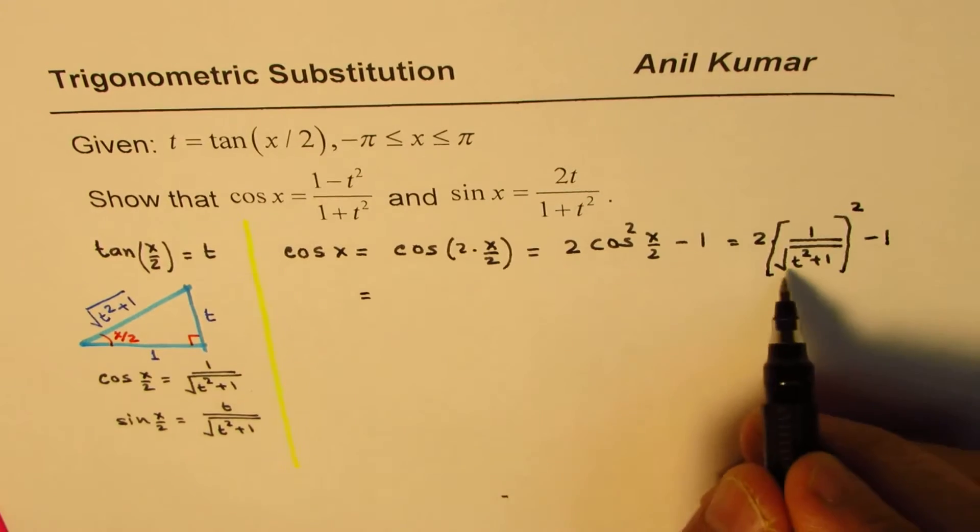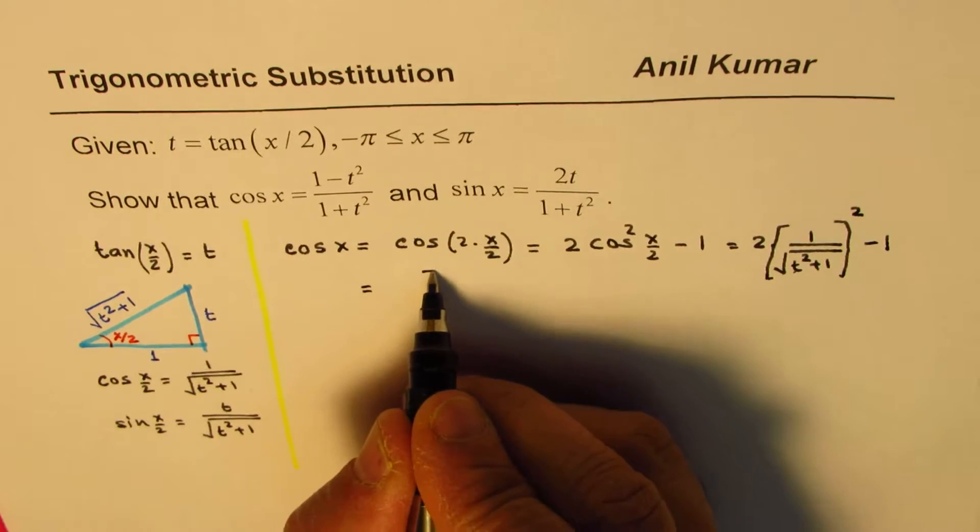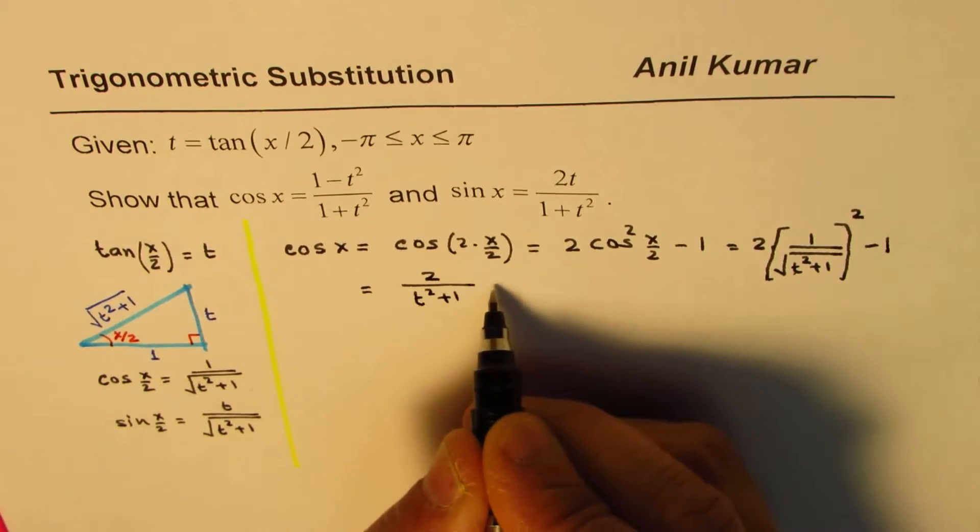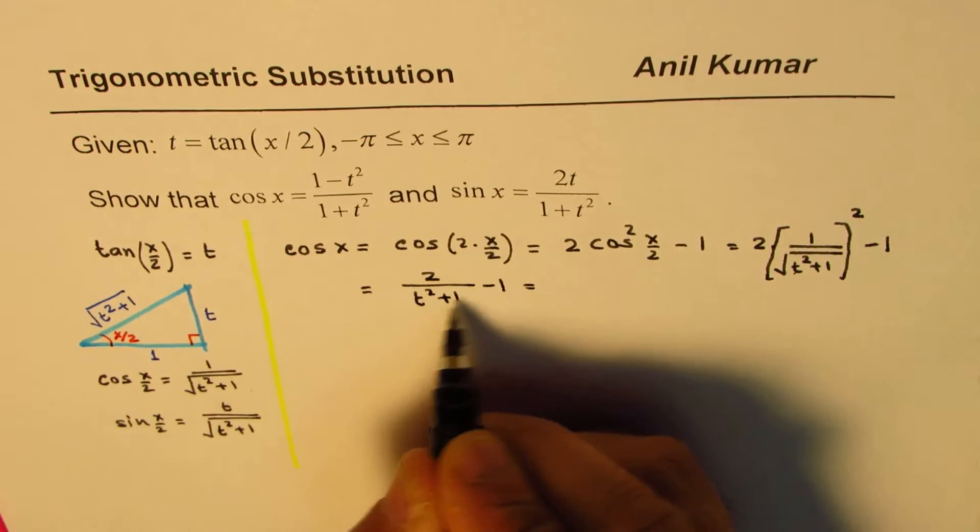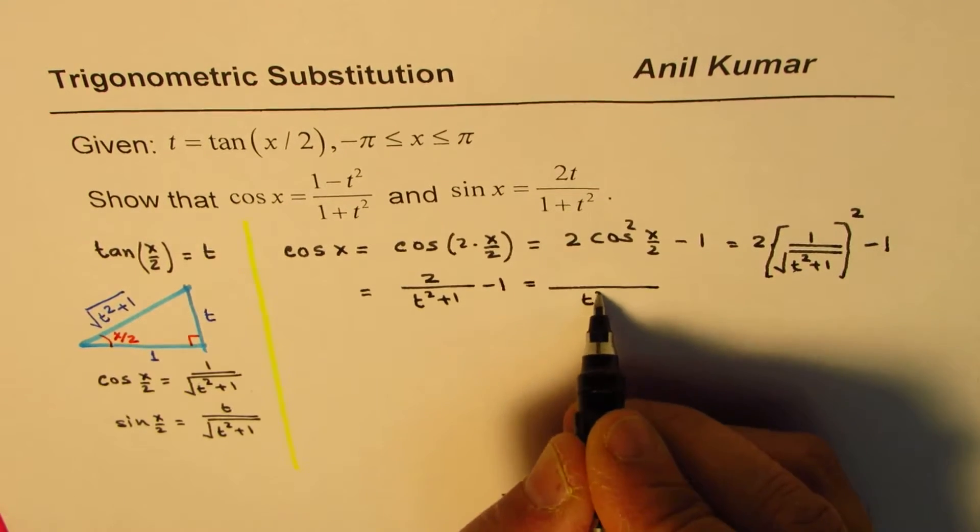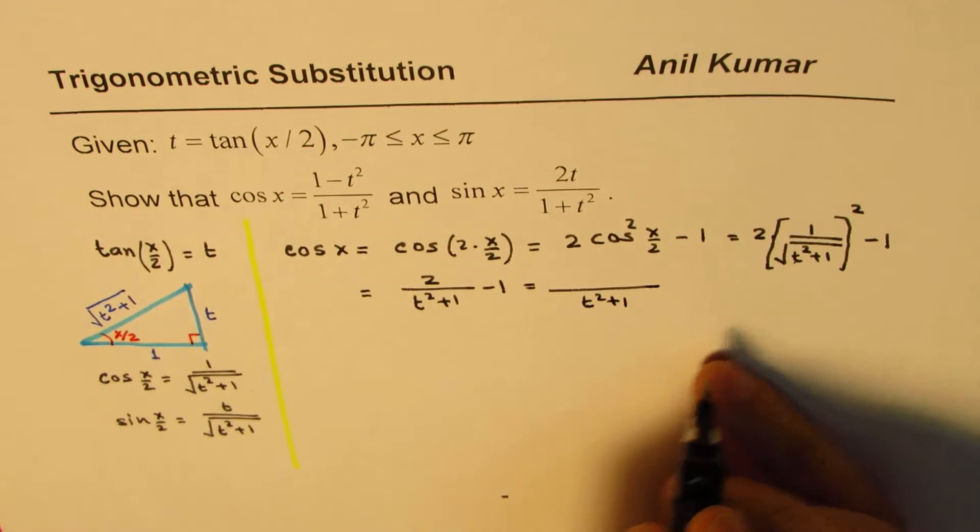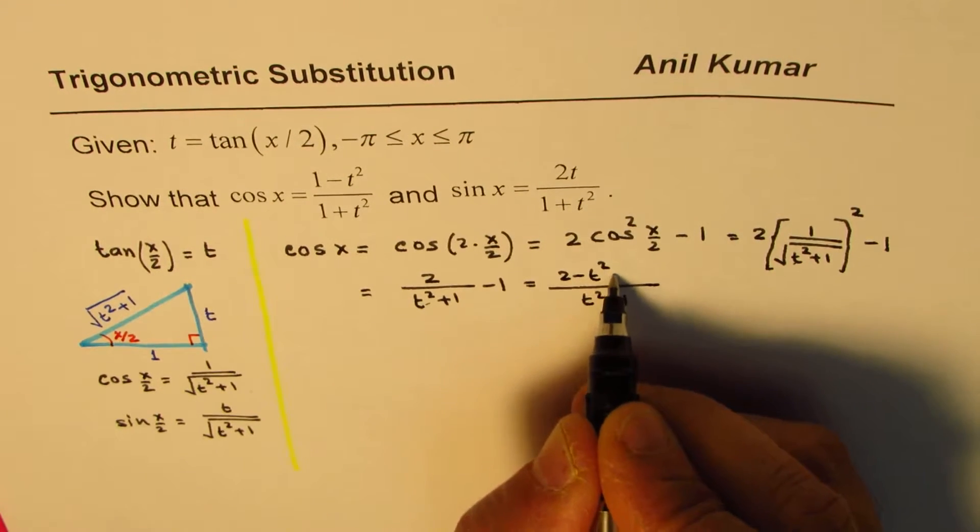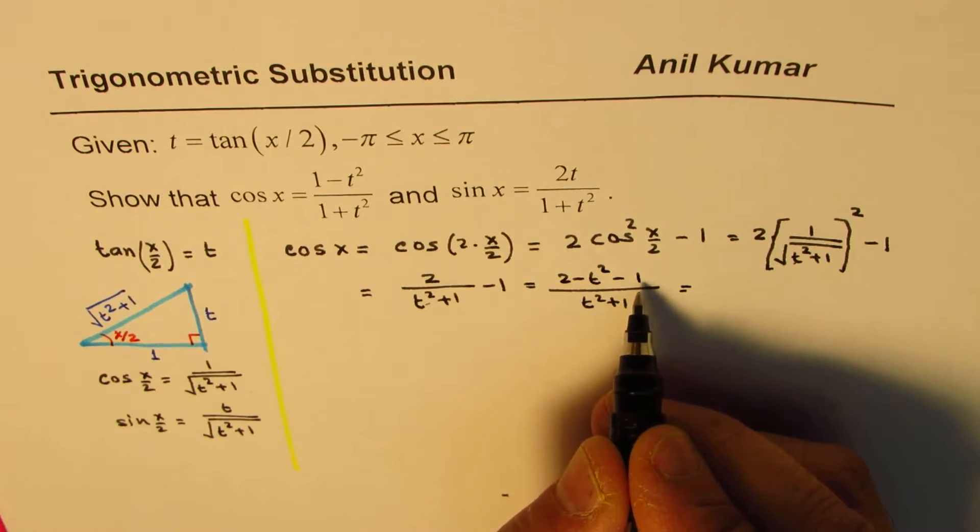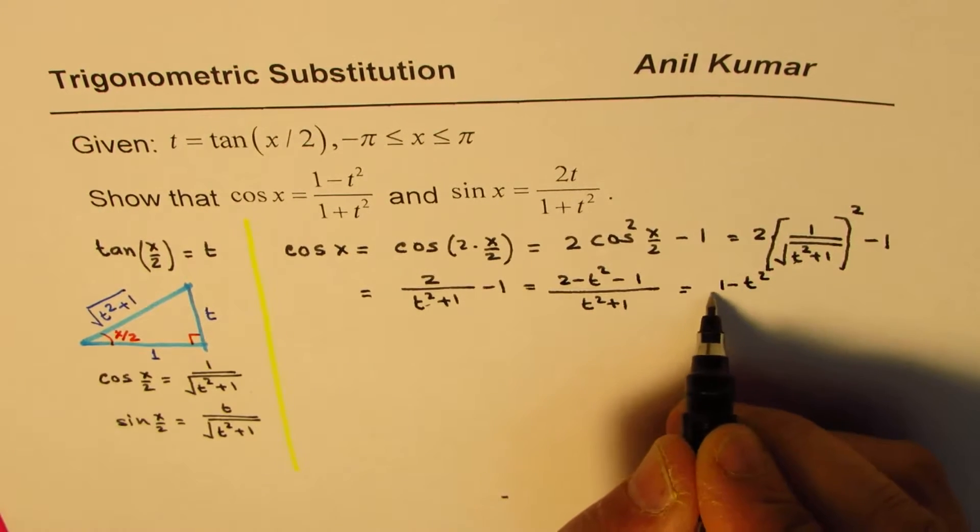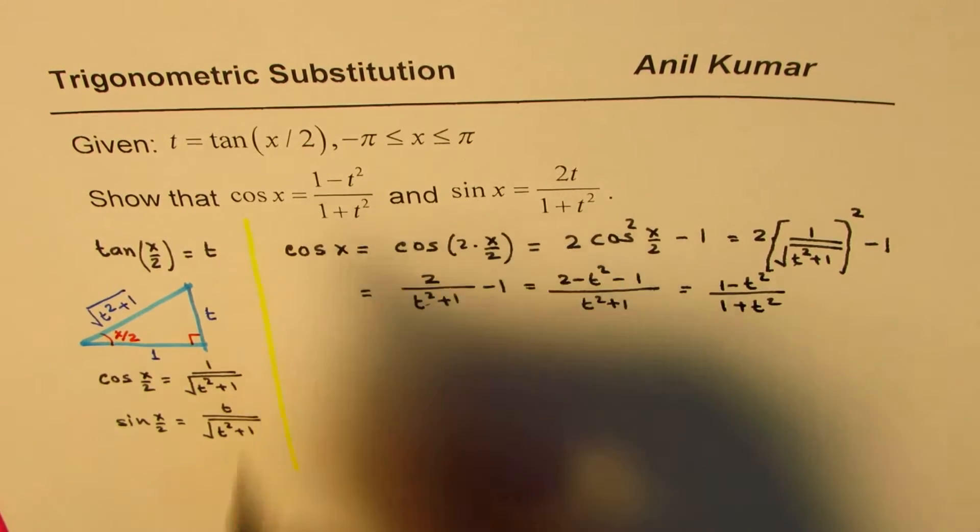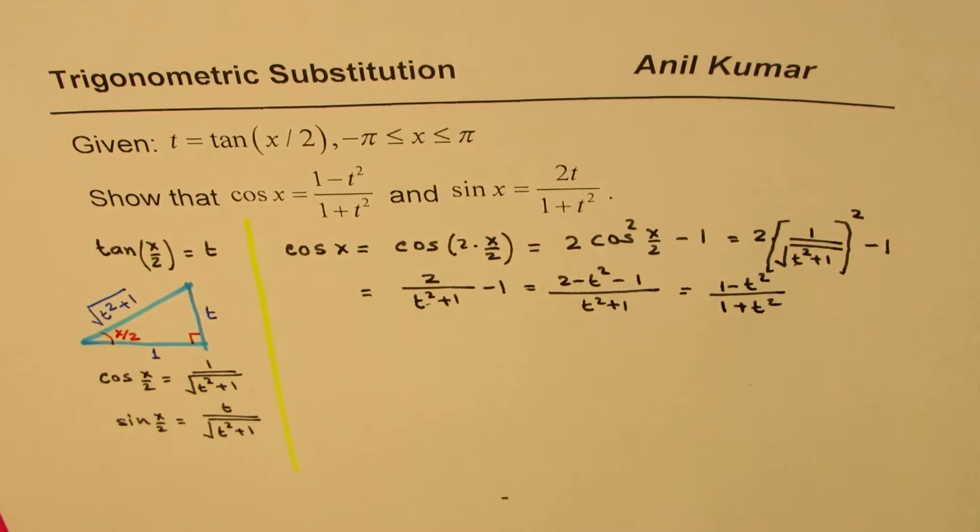So which you could write as, now this square root will vanish. So we have 2 over t² plus 1 minus 1. And you can simplify this. So taking it there, we have a common denominator of t² plus 1. And once you take this there, you get 2 minus t² minus 1. 2 minus 1 is 1. So we get (1 - t²)/(1 + t²). So we have derived the first expression.